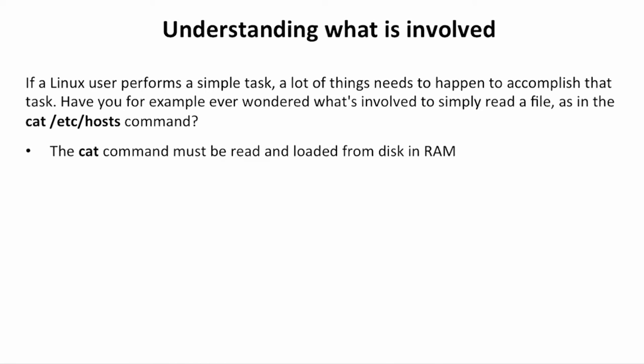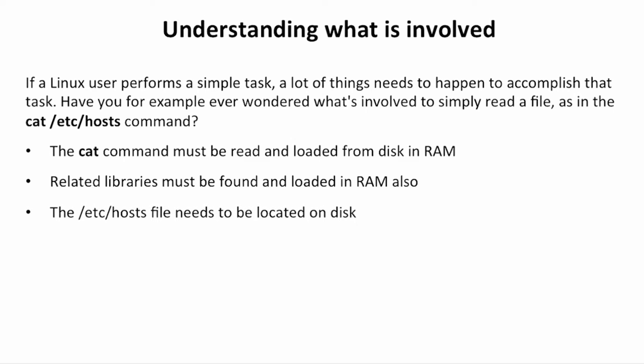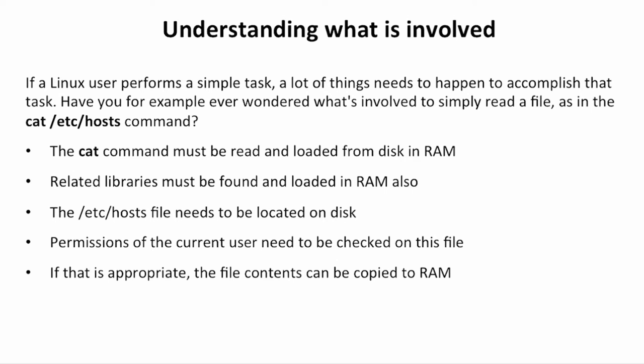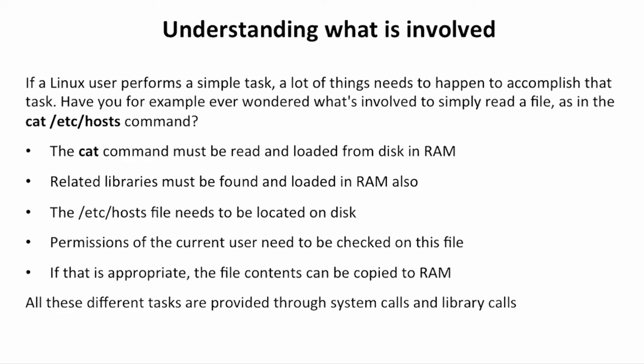It starts with the cat command that must be read and loaded from disk into RAM. Only once it's in RAM it can be used. Next, the related libraries must be found and loaded in RAM also. Then the /etc/hosts file needs to be located on disk, because that's what you want to read using cat. The permissions of the current user need to be checked on this file as well, and if these permissions are appropriate, the file contents can be copied to RAM. All of these different tasks are provided through system calls and library calls, and that is really what we need to explore in this lesson.